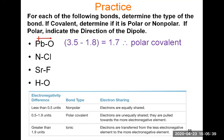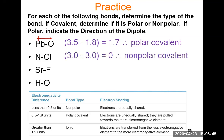For N-Cl: nitrogen has an electronegativity of 3.0 and chlorine also has 3.0. They pull on the electrons with equal strength, so the electronegativity difference is zero — this is a non-polar covalent bond. Electrons are equally shared between nitrogen and chlorine.